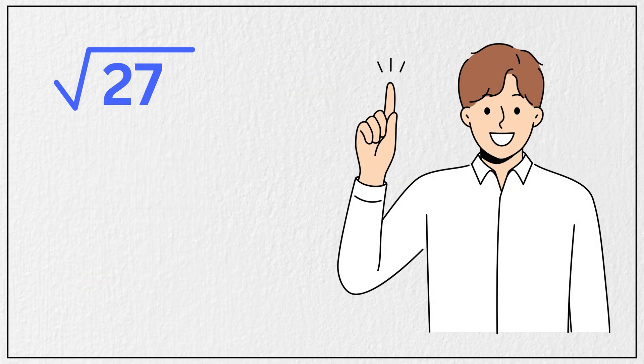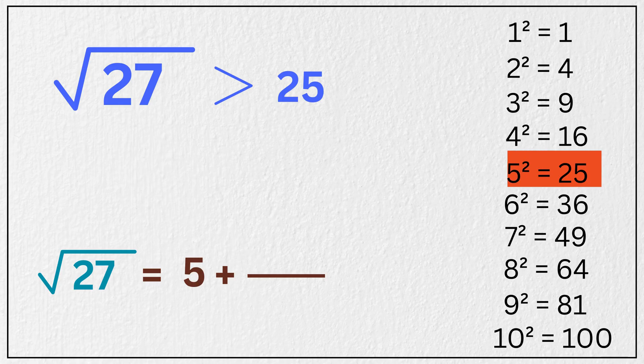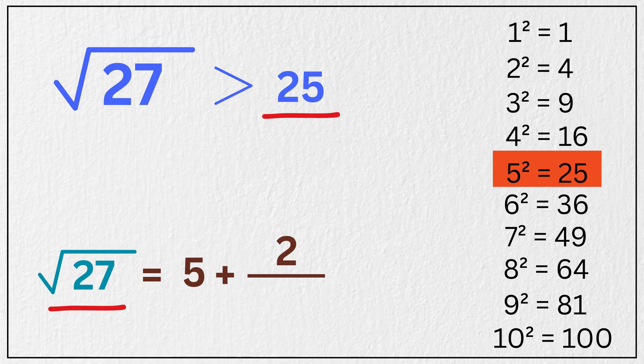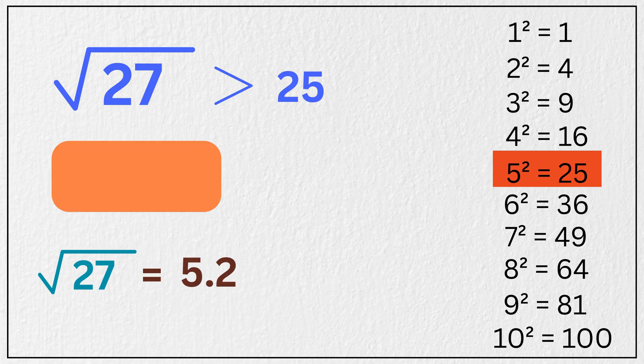One more we will do with lightning speed. Square root of 27, the perfect square just less than 27 is 25, and its square root is 5. Subtract 25 from 27 to get 2. Double this 5 to get 10. 2 over 10 is 0.2. So our answer is 5.2. The real square root is 5.196. Nearly perfect.